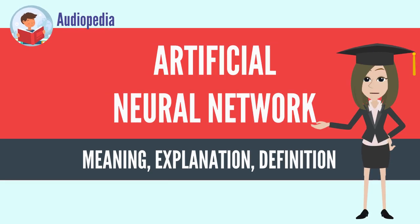Artificial neural networks, or connectionist systems, are computing systems vaguely inspired by the biological neural networks that constitute animal brains. The neural network itself is not an algorithm, but rather a framework for many different machine learning algorithms to work together and process complex data inputs. Such systems learn to perform tasks by considering examples, generally without being programmed with any task-specific rules.